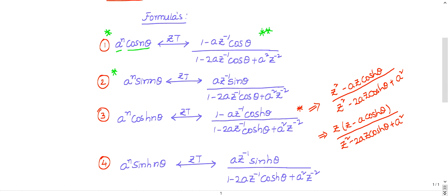Then a^n·sin(nθ) has a Z-transform of a·Z⁻¹·sinθ divided by (1 − 2a·Z⁻¹·cosθ + a²·Z⁻²) — just remove the '1 minus' from the numerator; the denominator doesn't change. Note: some people mistakenly write sin theta in the denominator — it is cos theta only. So Formula 1 is (1 − a·Z⁻¹·cosθ)/(1 − 2a·Z⁻¹·cosθ + a²·Z⁻²) and Formula 2 is a·Z⁻¹·sinθ/(1 − 2a·Z⁻¹·cosθ + a²·Z⁻²).